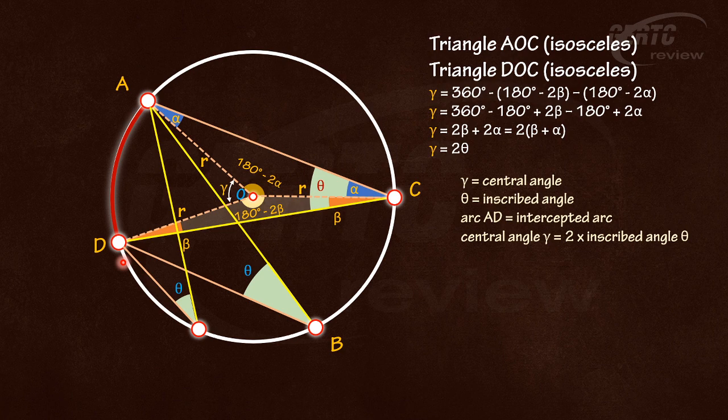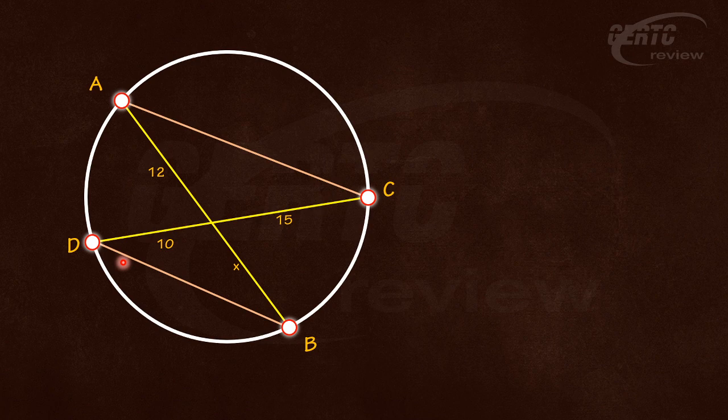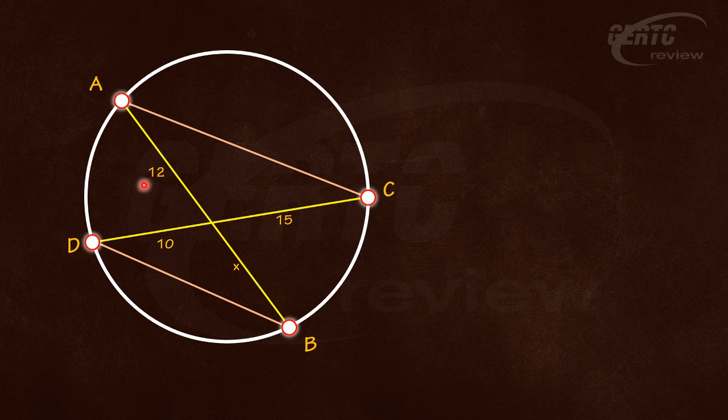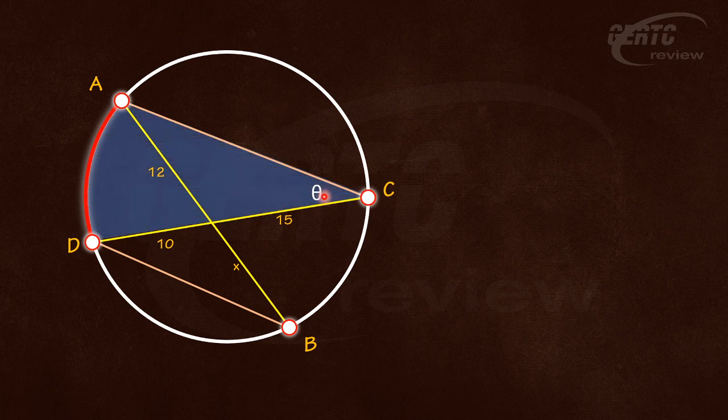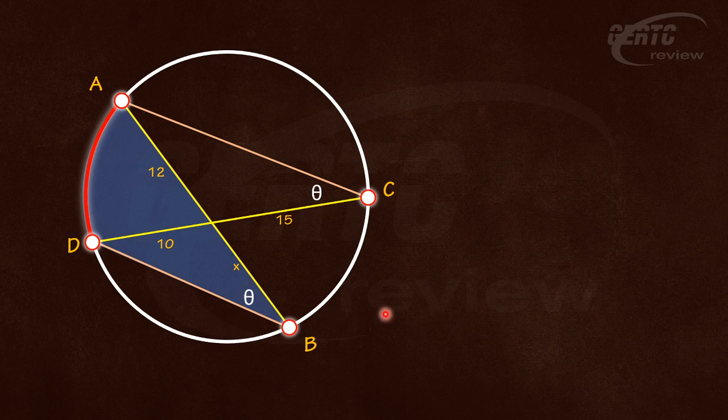Now let us use that principle to prove or to derive a formula here. Going back to our problem, let's consider this arc. The inscribed angle of that arc is this one, so this is θ. And another is this one here, also equal to θ, inscribed angle of the arc.